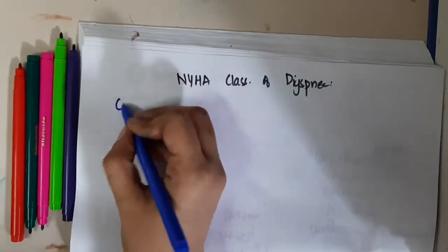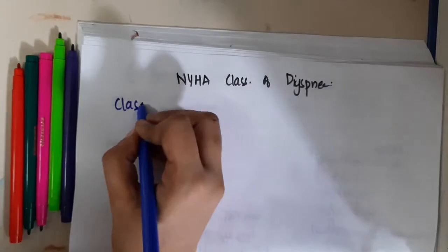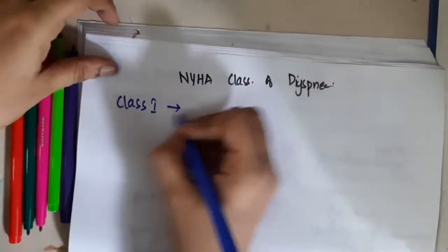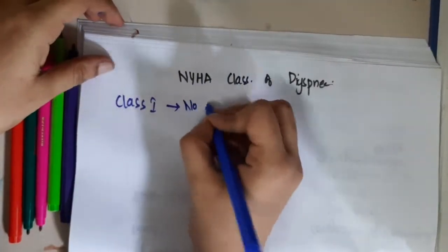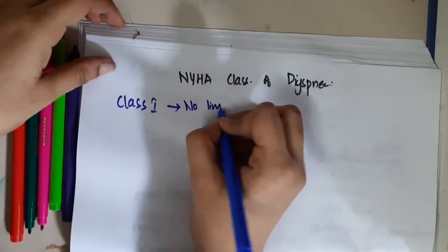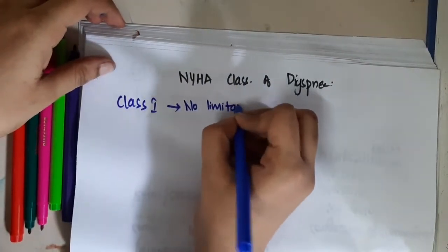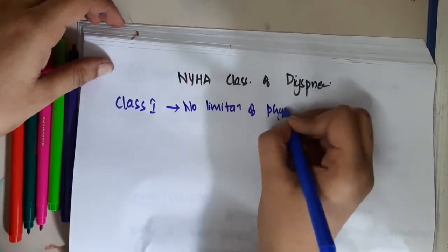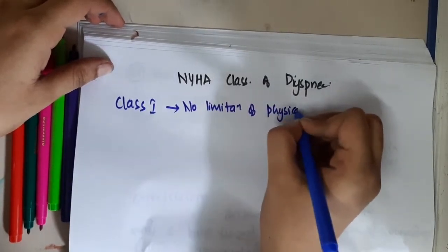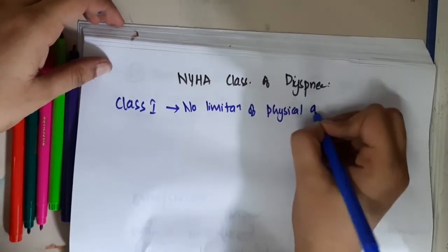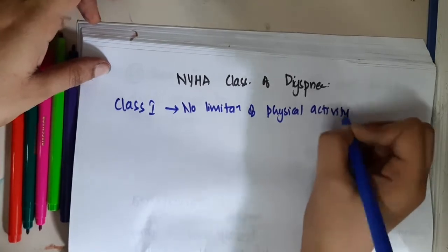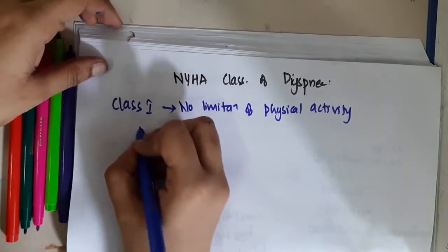In Class 1, there is no limitation of physical activity. In Class 2, there is slight limitation of physical activity.